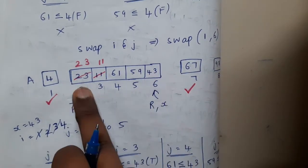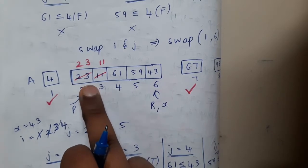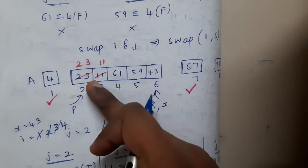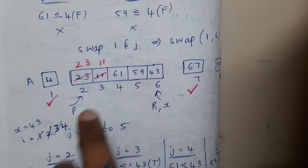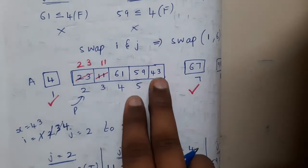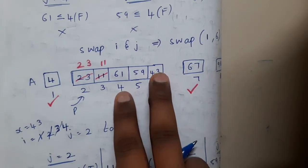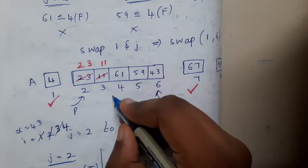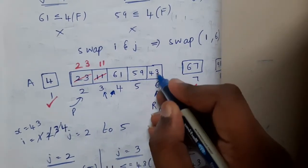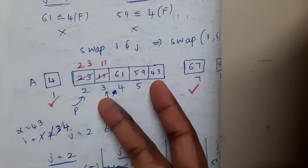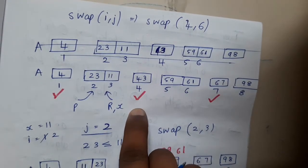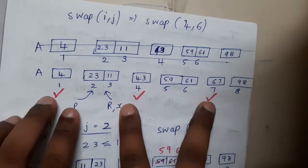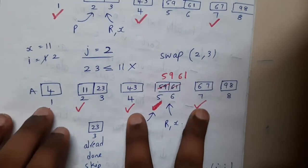Now with 5 elements remaining: compare 43 with 23 — yes, 23 is less than 43. Compare 43 and 11 — need to swap but they are swapped in those positions. Compare 43 and 61 — no change, no change, so i is stuck here. You do i plus 1 and swap with the current position, finding the sweet spot for 43.